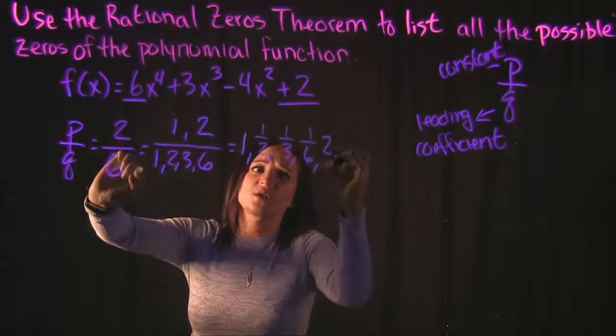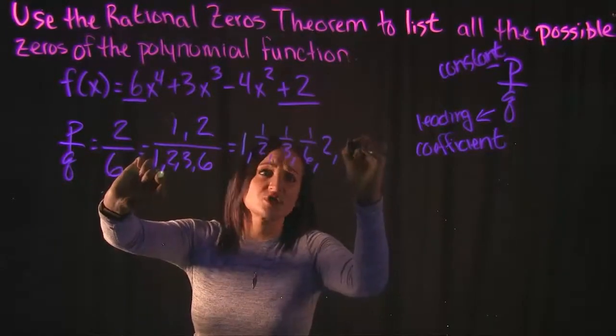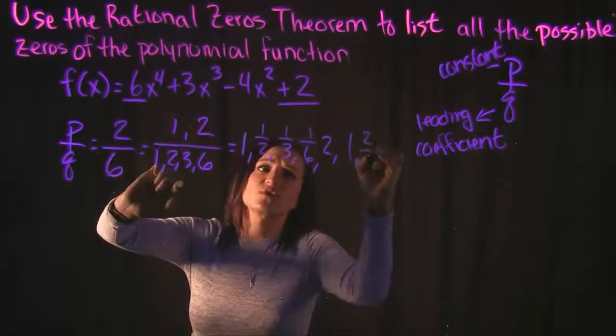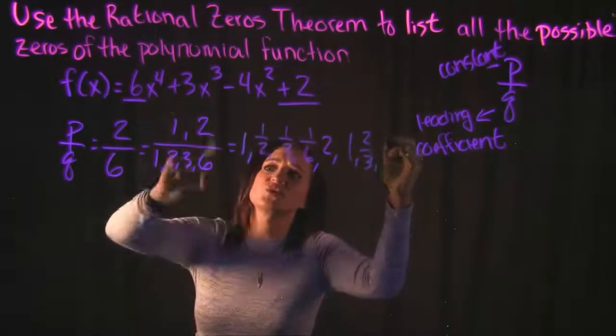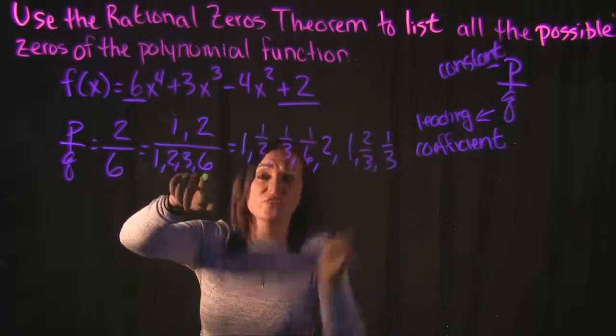2 over 1, which is just 2. 2 over 2, which is just 1. 2 over 3, and then 2 over 6, which actually just gets reduced to 1/3.